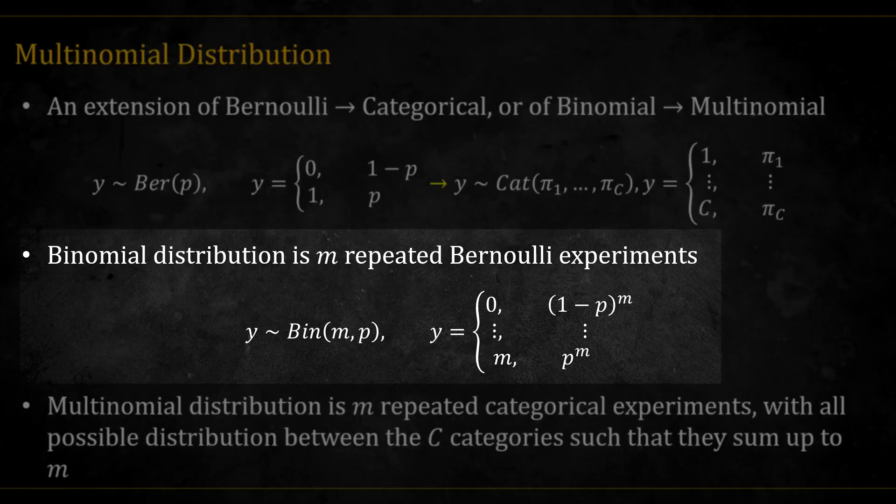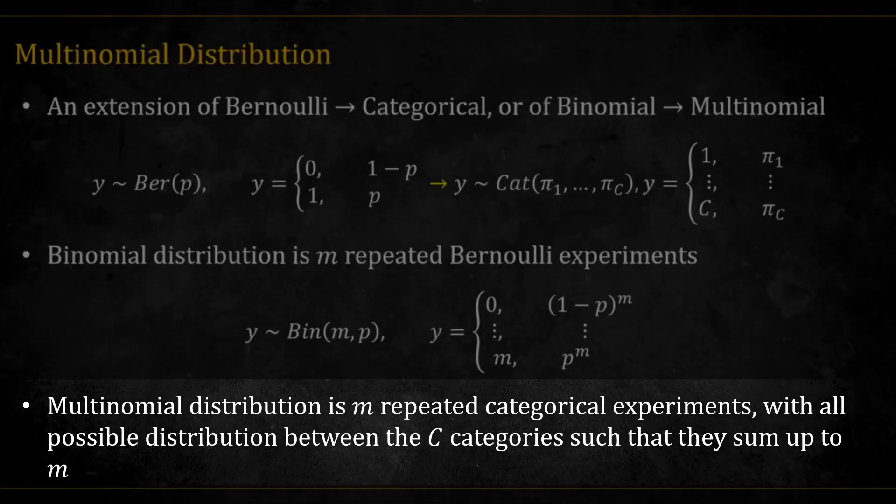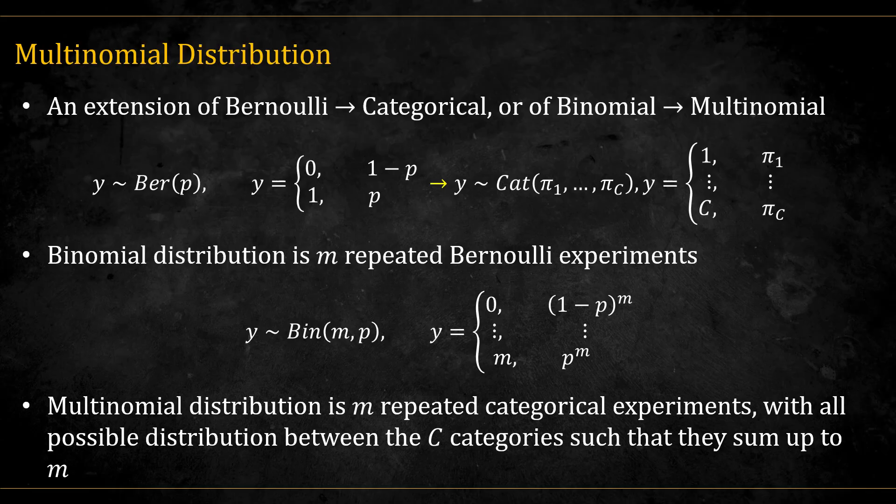Binomial distribution is m repeated Bernoulli experiments, such that there can be 0, 1, and up to m possible successes. Multinomial distribution is m repeated categorical experiments, with all possible distributions between the c categories such that they sum up to m.